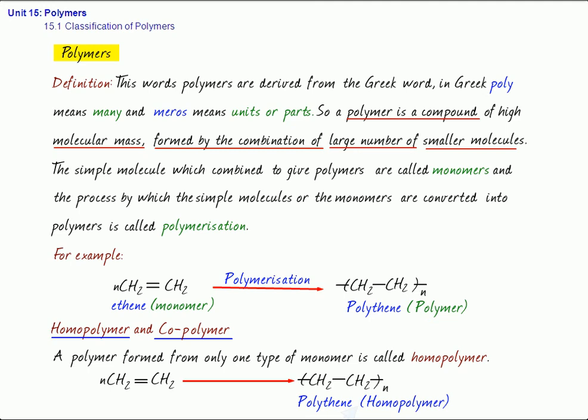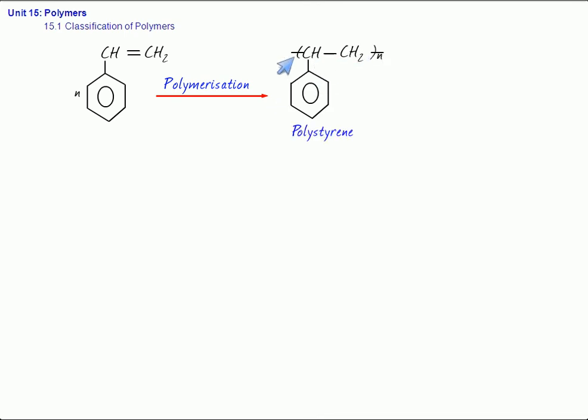Polystyrene, when you take N number of styrene, then on polymerization, it will give polystyrene. So, styrene, N number of styrene on polymerization gives polystyrene. Now, polystyrene is made up of only one type of monomer, styrene. Therefore, it is homopolymer.